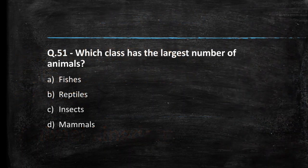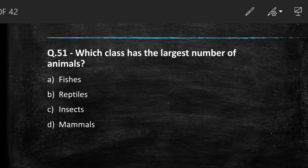Our first question is: which class has the largest number of animals? Options are fishes, reptiles, insects, mammals. With no doubt, the answer is insects. Insects have the largest number of animals.